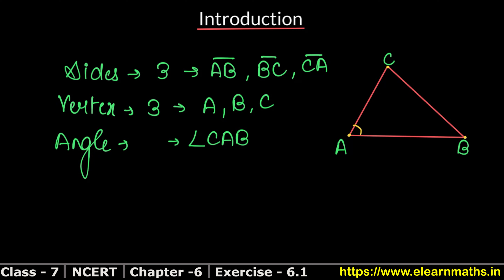Similarly, the angle at B can be written as angle ABC, because B is the middle point. And the angle at C can be written as angle BCA or angle ACB. So there are three sides, three vertices, and three angles in a triangle. This was a small introduction to the triangle.